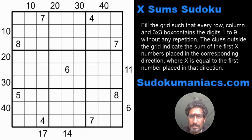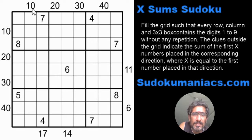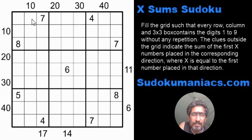Coming to the puzzle — the rules: just like classic rules, no digit can repeat in a row, column, or a 3x3 box. Now you will see there are certain digits outside the grid. What this means is the digits outside the grid denote the sum of the first X numbers in that direction, where X is the digit in the first cell in that corresponding direction.